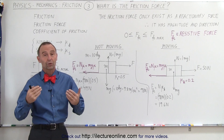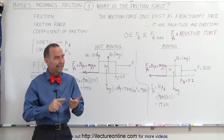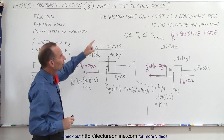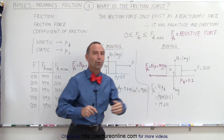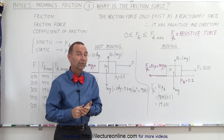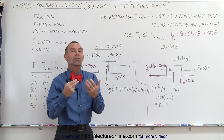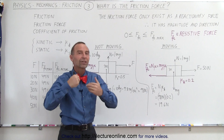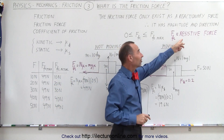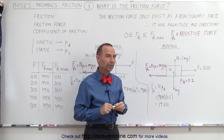Just as the word tells you, it is indeed a force, just like any other force, so therefore it's a vector quantity — it has magnitude and direction. Now friction force is what we call a reactionary force. It reacts as a result of another force acting on an object, so friction force by itself cannot exist. We can also think of the friction force as a resistive force — it resists the force that causes it in the first place.